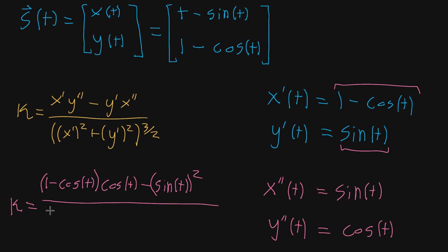And the whole thing is divided by x prime squared. So x prime was one minus cosine of t, minus cosine of t squared plus y prime squared. So y prime was just sine, so that's just gonna be sine squared of t. And that whole thing to the power three halves.